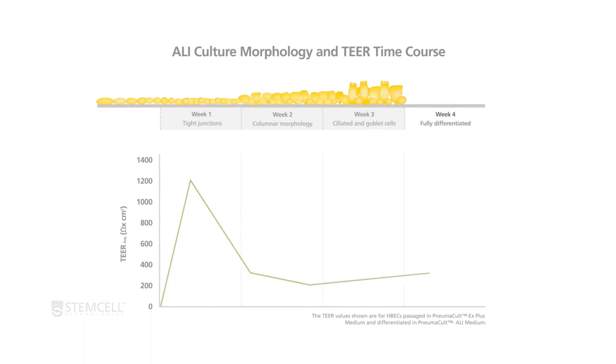At week 4 post-ALI, the cultures will be fully differentiated and display coordinated cilia beating and mucus production, and TEER reading values are maintained.